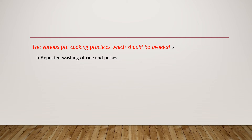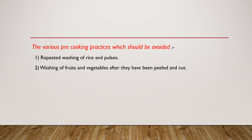The first is repeated washing of rice and pulses, which leads to loss of nutrients. The second is washing fruits and vegetables after they have been peeled and cut — we should wash them before cutting or peeling, not after, as washing after also leads to loss of nutrients.